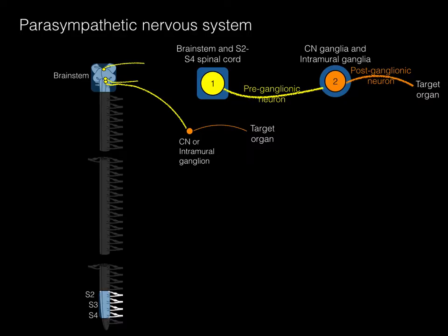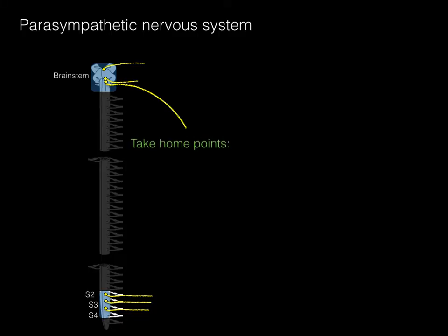We also look at some other cranial nerves. Cranial nerves 3, 7, 9, as well as 10 are all going to be giving parasympathetic innervation. Down in the sacral region, preganglionic parasympathetic neurons arise in what would be the lateral horn, exit out the ventral root and ventral ramus into the pelvic splanchnic nerves, and hit their target organs.